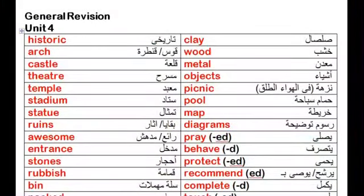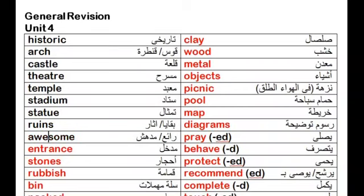General Revision Unit 4. Historic. Arch. Castle. Theater. Temple. Stadium. Statue. Ruins. Awesome.